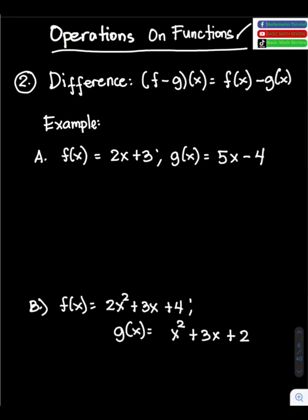Number 2, we have difference. The formula for finding the difference of functions is: quantity of f minus g times x equals f of x minus g of x.